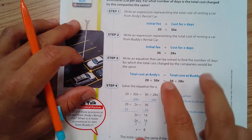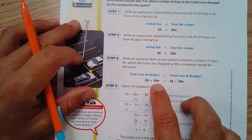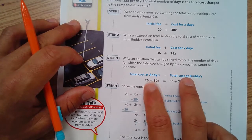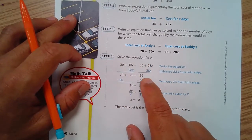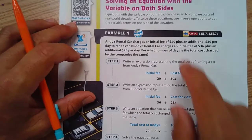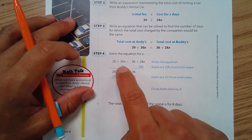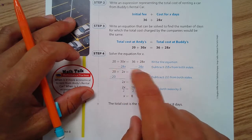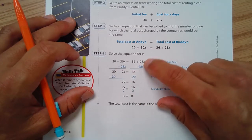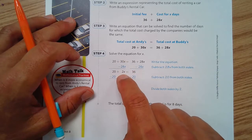Now we're going to set both of these expressions equal to each other to find out when the value will be the same. X represents the number of days. When we're doing this, we want the variables—you have to use inverse operations to get the variable terms on one side of the equation. We're going to subtract 28, which eliminates the variables on the right-hand side and collects them all on the left. 30 minus 28 is 2.